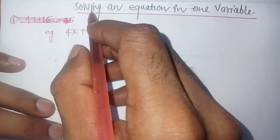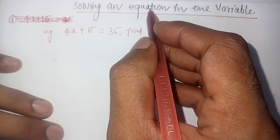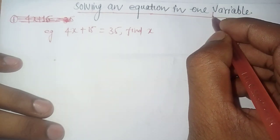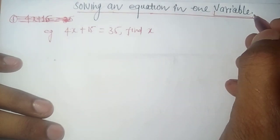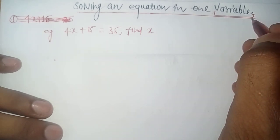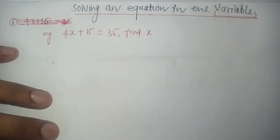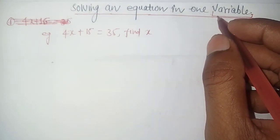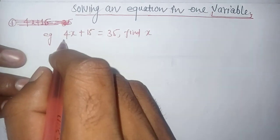Hello everyone, today I will tell you about solving an equation in one variable. What is a variable? It is a symbol for which the fixed value is not defined, which does not have any fixed value.